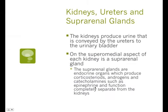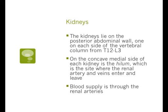The kidneys produce urine, which is conveyed by the ureters to the urinary bladder. On the superomedial aspect of each kidney is a suprarenal gland — these are endocrine organs which produce corticosteroids, androgens, and catecholamines such as epinephrine, and they function completely separate from your kidneys. The kidneys lie in the posterior abdominal wall, one on each side of the vertebral column, from T12 to L3 — I want you to know that so you can find the kidneys when you go to palpate them. The concave medial side of each kidney is the hilum, where the renal artery and veins enter and leave; blood supply is from the renal arteries.